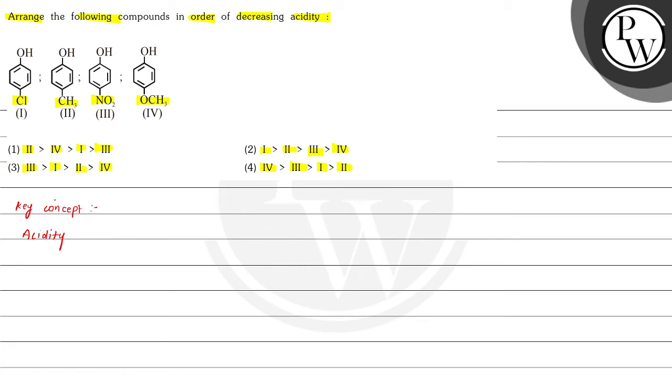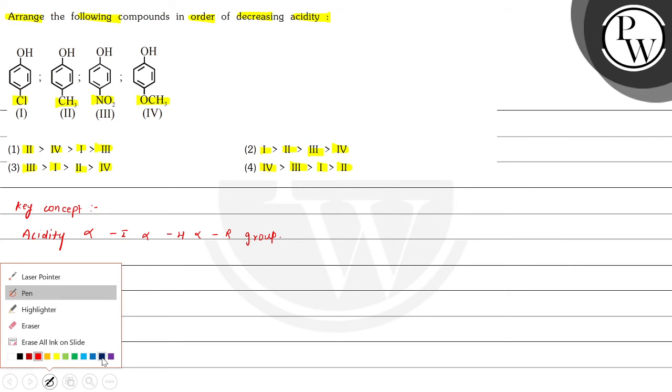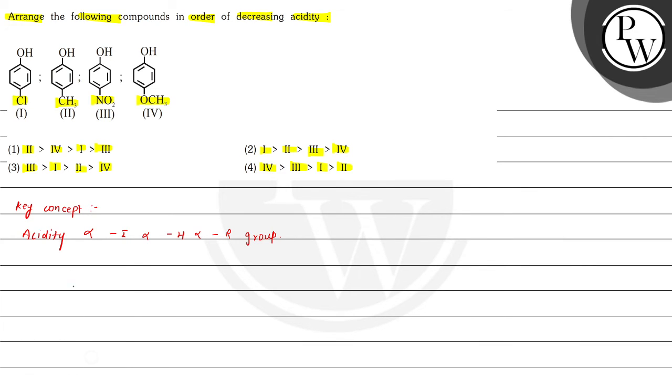The key concept is that acidity is directly proportional to -I effect and -R effect.